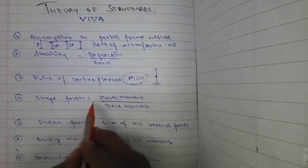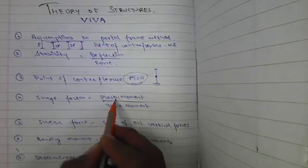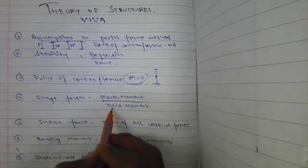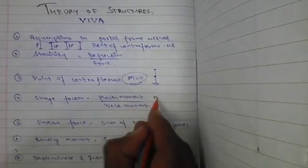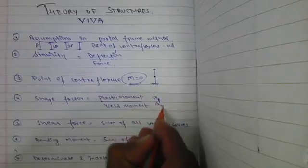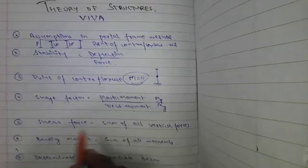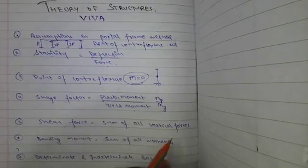Now safe factor. Safe factor is defined as the ratio of plastic moment divided by the yield moment, means MP upon MY. Shear force is basically the sum of all the vertical forces.